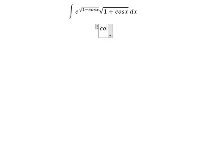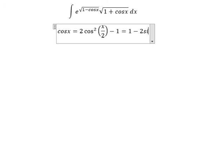We have cosine x equal to 2 cosine squared x over 2 minus 1, equal to 1 minus 2 sine squared x over 2.